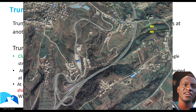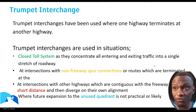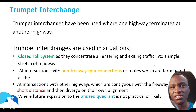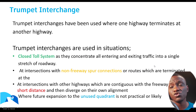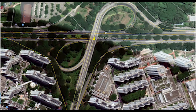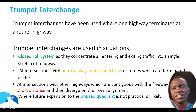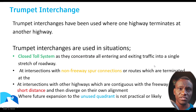Another situation is where the freeway is contiguous for a short distance and then diverges after that — those are situations where you have to use a trumpet interchange. And then in situations where in the future there's an unused quadrant — referring to the loops — and you don't anticipate needing that expansion, most likely you go with the trumpet interchange rather than something like a partial cloverleaf.